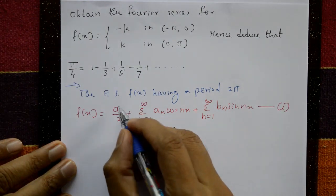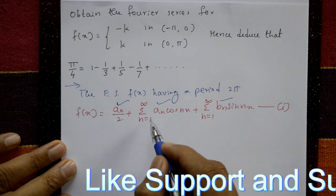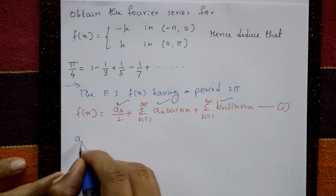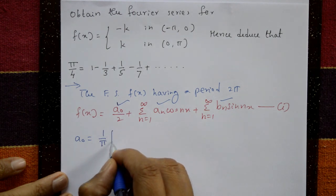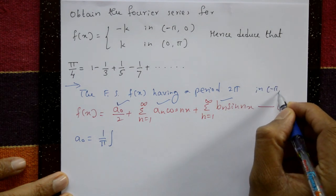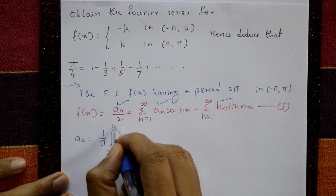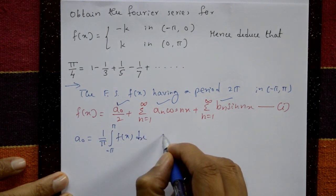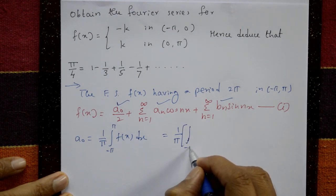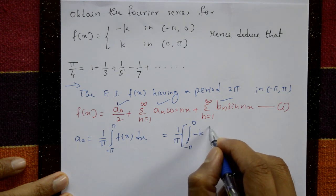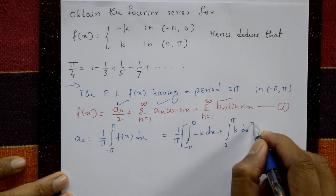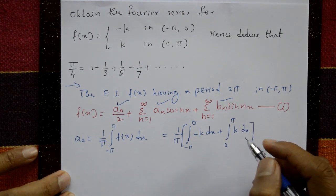We require the values of a₀, aₙ, and bₙ, then substitute into equation 1 and put x equal to a suitable value to get the series. First, a₀ equals 1/π times the integral from minus π to plus π of f(x) dx. But this is a discontinuous function: from minus π to 0 the function is minus k, and from 0 to π it is plus k.